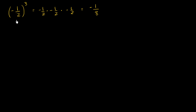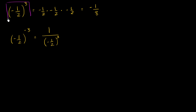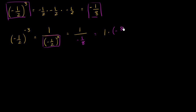Now what should negative 1 half to the negative 3 power be, based on everything we just talked about? It should be equal to 1 over negative 1 half to the positive 3 power. We just figured out that negative 1 half to the positive 3 power is negative 1 eighth. So it's equal to 1 over negative 1 eighth, which equals 1 times the reciprocal — that is, negative 8 over 1 — which equals negative 8.